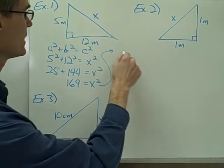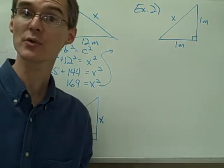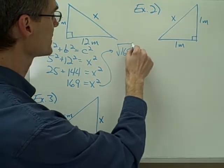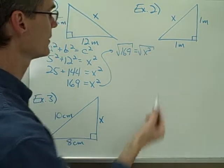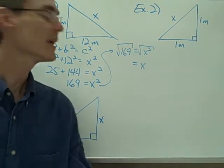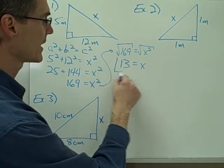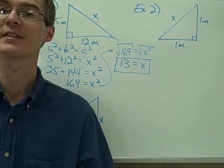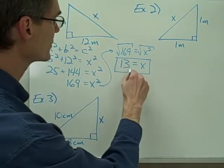Twenty-five plus one forty-four is one hundred sixty-nine. I take the square root of each side to solve for X. The square root of 169 equals the square root of X squared, which gives X. Since 169 is a perfect square — meaning it has a whole number as its square root — the value of X is thirteen meters.